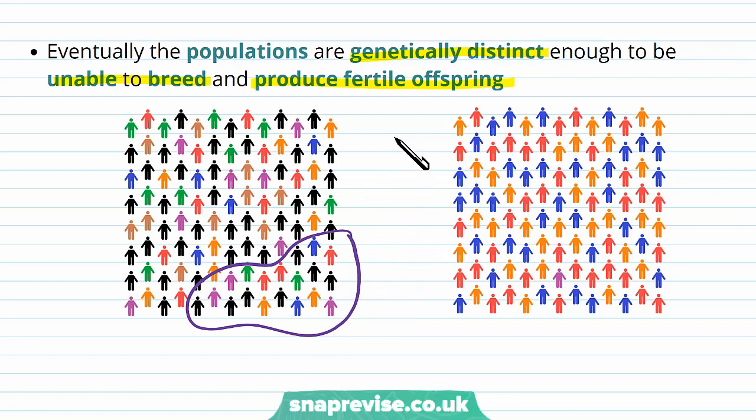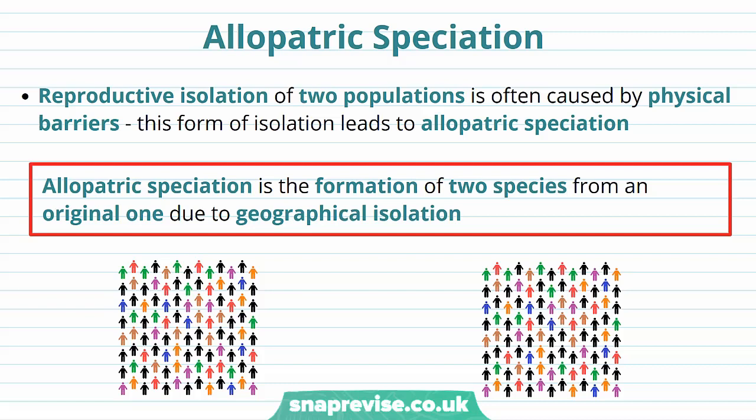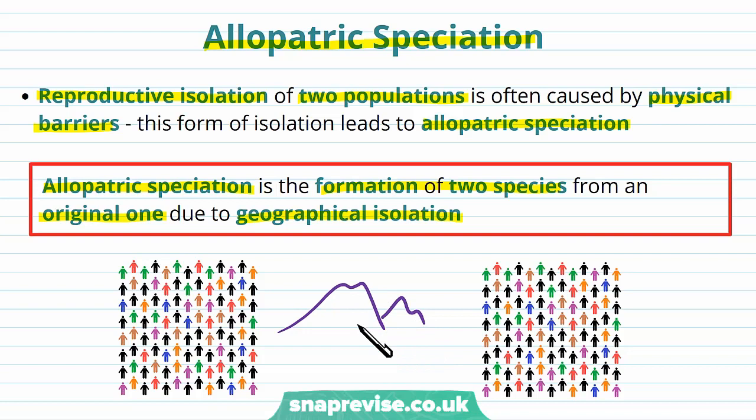Reproductive isolation can come from two main methods. One of them is called allopatric speciation. In this case, the reproductive isolation of the two populations is caused by something physical — a physical barrier. Allopatric speciation is defined as the formation of two species from an original one due to some geographical isolation. For example, a mountain range could separate two groups which eventually develop into their own distinct species.